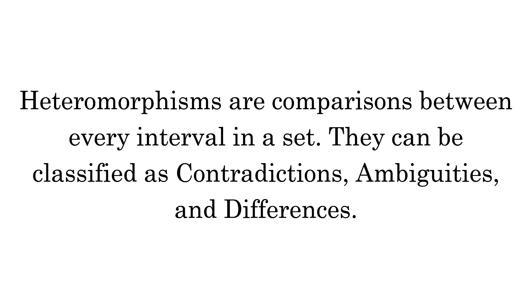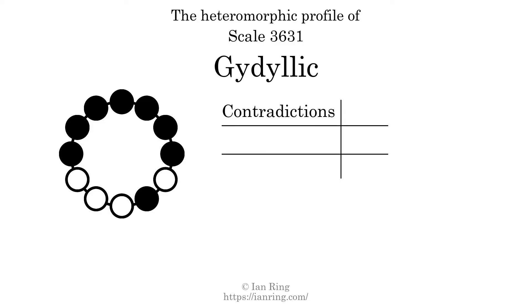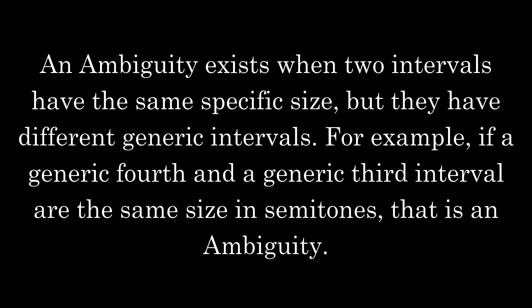Heteromorphisms are comparisons between every interval in a set. They can be classified as contradictions, ambiguities, and differences. A contradiction exists when a small generic interval has a bigger specific size than a larger generic interval — for example, if a generic third interval has a larger size in semitones than a generic fourth interval. The number of contradictions in this scale is 90.